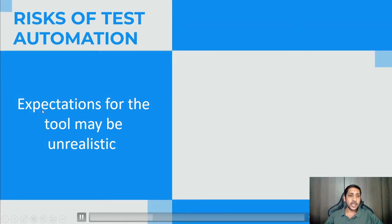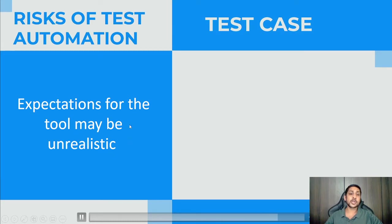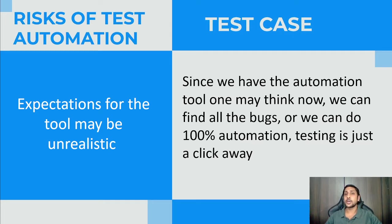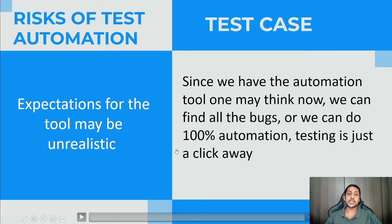The first risk is that expectations for the tool may be unrealistic — whatever you are expecting from the tool may be too much. For example, since we have an automation tool, one may think we can now find all the bugs, or that 100% automation testing is just a click away. That is not the case. We have to maintain test cases, execute them, debug failures, and we cannot find all the bugs. We can only reduce the probability.